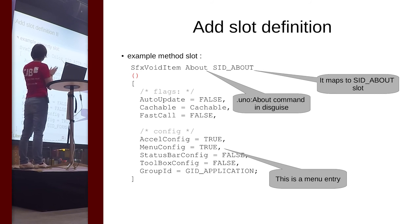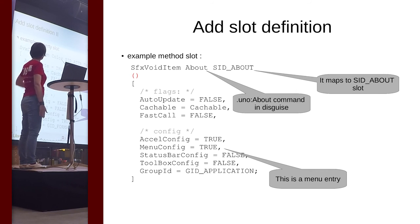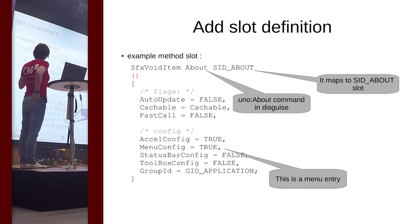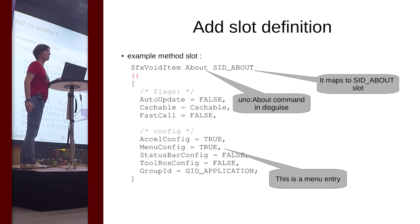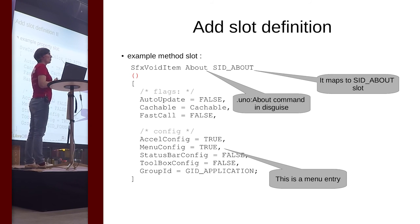Slot definitions live in files with the ending SDI — like strategy defense initiative, but it's something else. They usually look like this. This is an example of a state slot that simply changes the color of the font. You can see the UNO command in disguise — it maps that UNO command to the slot ID we've just defined. There are lots of flags, and about half of them are obsolete, but they're still copy-pasted around anyway. The last slide contains links to documentation that defines what those flags exactly mean.